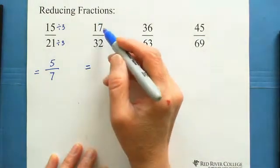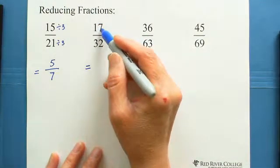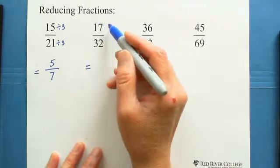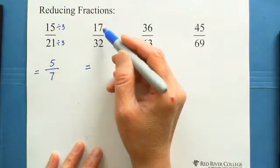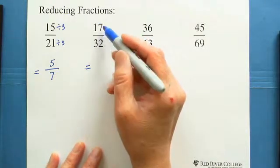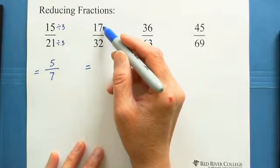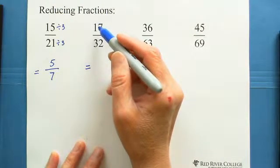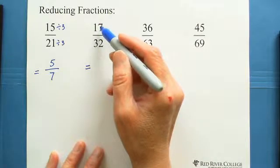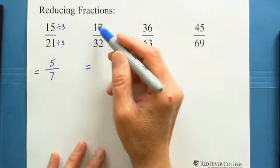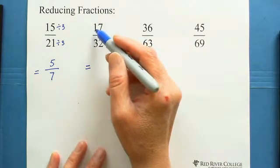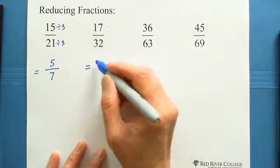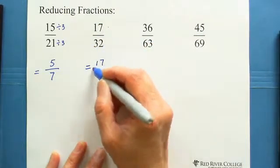What about 17? 1 plus 7 is 8 — it's not divisible by 3, so this is not working. Also, 17 is a prime number, so its only factors are 1 and itself. So this fraction is not reducible by 3, and the answer stays the same.